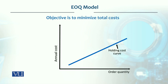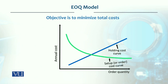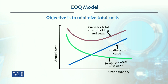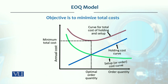The goal is to minimize total cost. The total cost curve is the sum of the setup/ordering cost curve and the holding cost curve. The intersection of the holding cost curve and the setup cost curve gives the optimum order quantity with the minimum total cost.